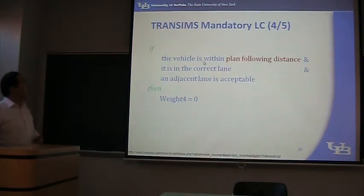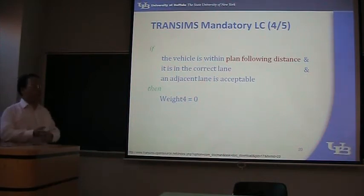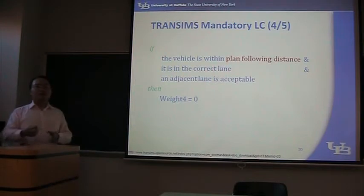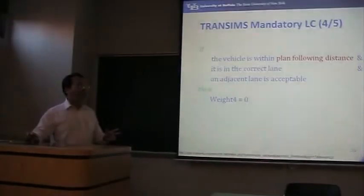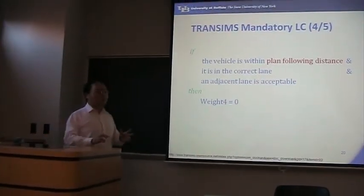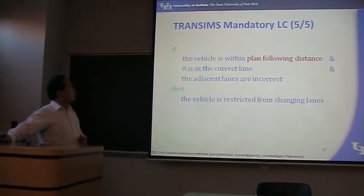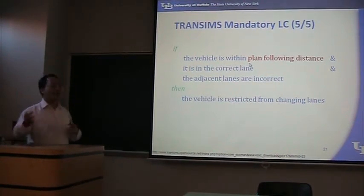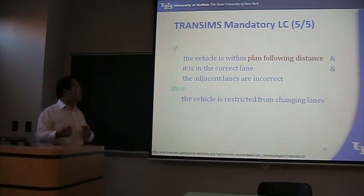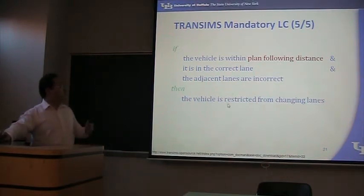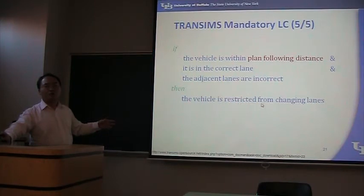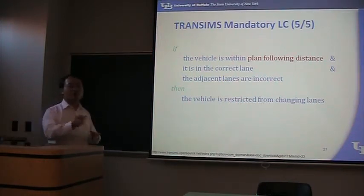The third case is that the vehicle is within the planned following distance and it's in the correct lane, but an adjacent lane is also acceptable. You can either go to that lane or stay on this lane. In this case, Weight 4 is equal to 0, so Weight 1 is not affected, and the lane change will only be discretional. The last case is if the vehicle is within the planned following distance, already on the correct lane, and adjacent lanes are incorrect — meaning the only lane you can travel is the current lane. Then Weight 4 will be minus 1, so Weight 1 plus Weight 4 equals 0, and the lane change condition will never be satisfied.